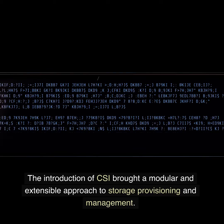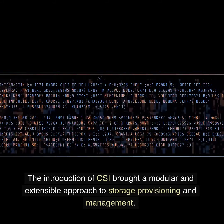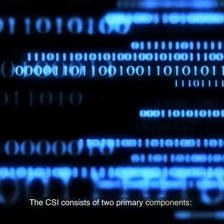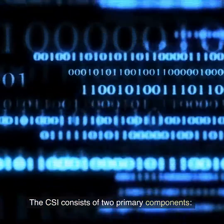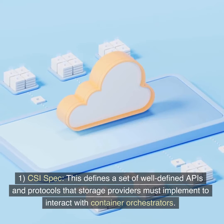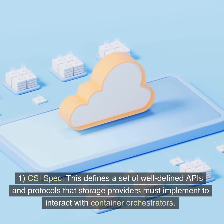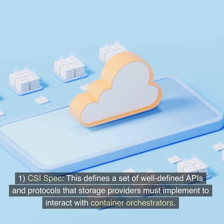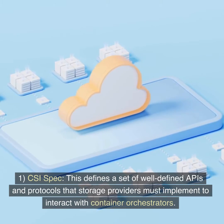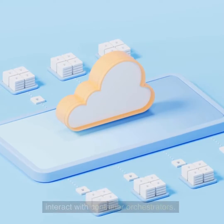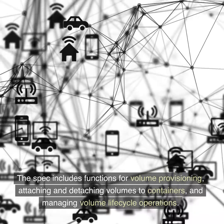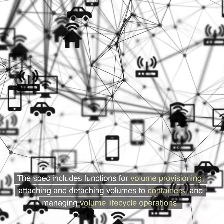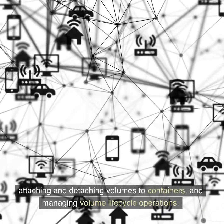The introduction of CSI brought a modular and extensible approach to storage provisioning and management. The CSI consists of two primary components. The first is the CSI Spec, which defines a set of well-defined APIs and protocols that storage providers must implement to interact with container orchestrators. The spec includes functions for volume provisioning, attaching and detaching volumes to containers, and managing volume lifecycle operations.